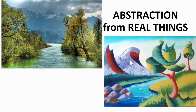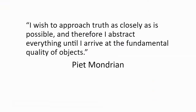So abstraction, then, at least partially, can include removing detail from real things to come up with a new, more interesting or appealing art idea about that real thing. One of the famous abstract artists was a guy named Piet Mondrian, who said: 'I wish to approach truth as closely as is possible, and therefore I abstract everything until I arrive at the fundamental quality of objects.'